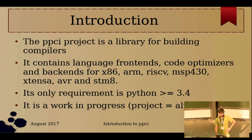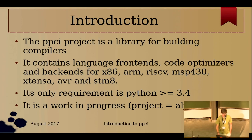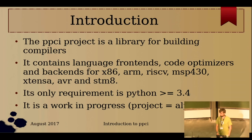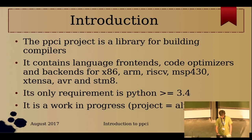In a nutshell, PPCI is a library for building compilers. It includes language front-ends, code optimization, and architecture backends. It's all written in Python, so the only requirement is Python greater than 3.4. One minor disclaimer: it's alpha status.